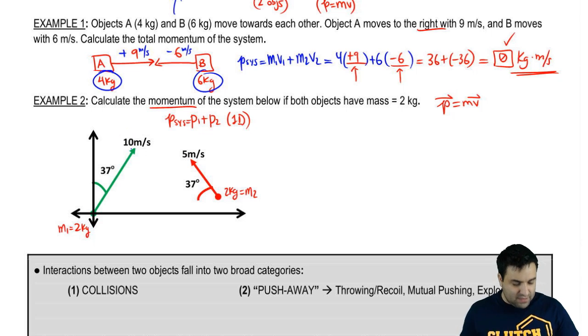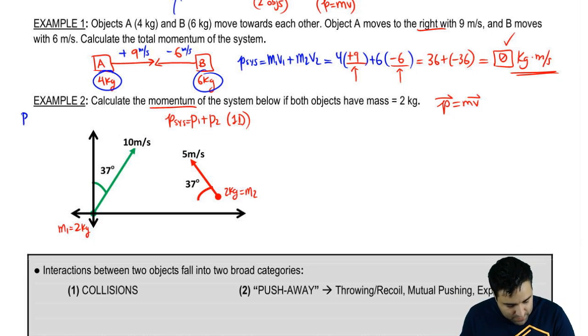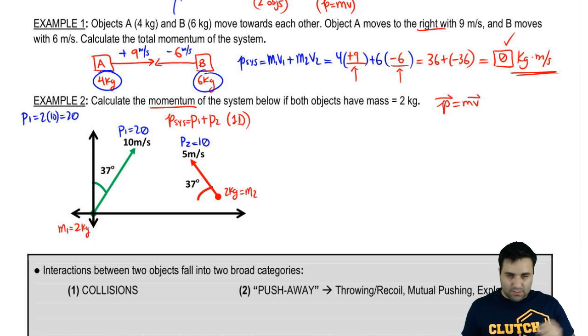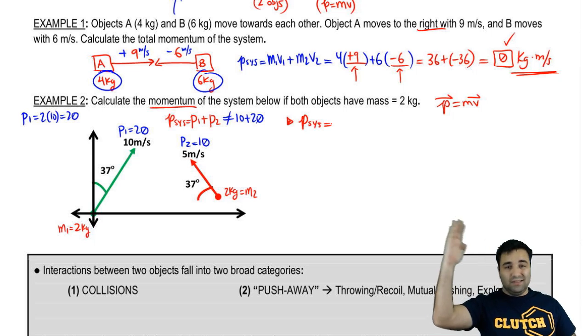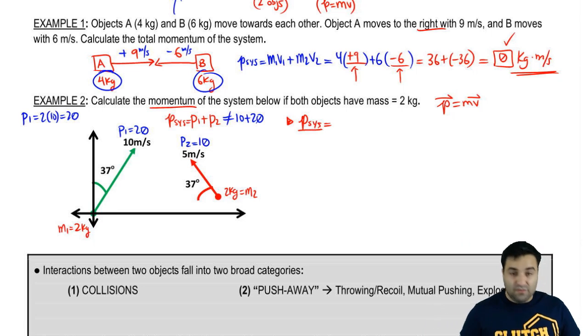Let me calculate the momentum real quick. Momentum is P equals MV. This guy has a mass of two and a velocity of 10, so I can write that P1 is 2 times 10, which is 20. So let me put that in here. P1 is 20. This mass is also 2, this velocity is 5, so P2 equals 10. That's the momentum of each of them. Now the sum of all momenta is not going to be 10 plus 20. That only works if they're pointing in the same direction. So what we're going to have to do here is we're going to have to use vector addition to do this. And the way that this works is that the total, the final answer, P system, will actually be a vector at an angle as well. This is just vector addition, simple vector addition.